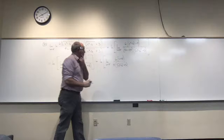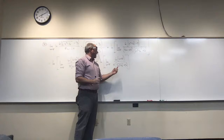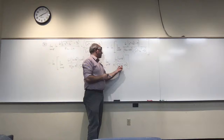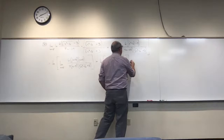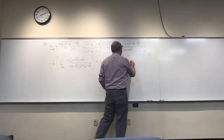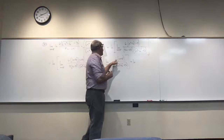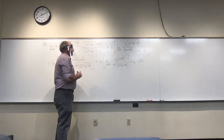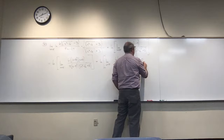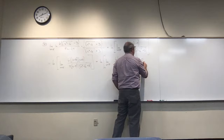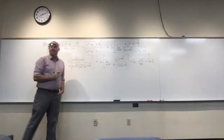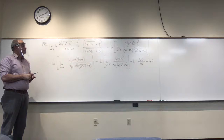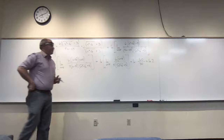The (x−5) factors cancel, and I'm left with ln of the limit as x goes to 5 of 6(x+5) divided by 5(√(x²−16) + 3). Now I can plug in 5. On top: 6 times 10 is 60. On the bottom: 5 squared minus 16 is 9, square root is 3, plus 3 is 6, times 5 is 30. So I get ln of 60 over 30, which is ln of 2. And that's the answer.